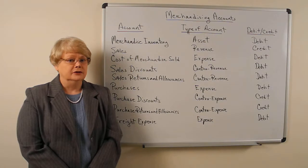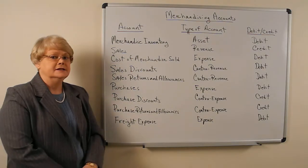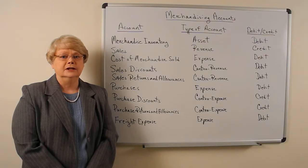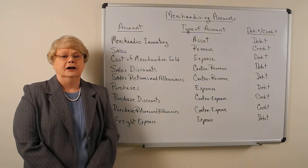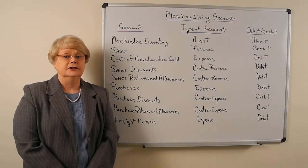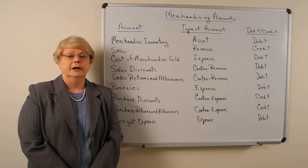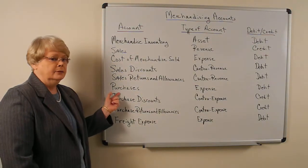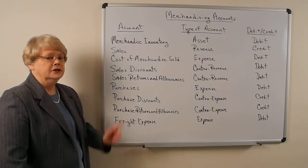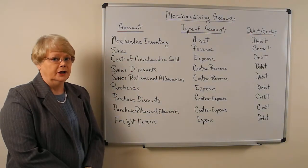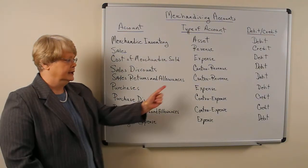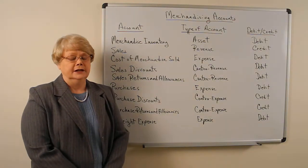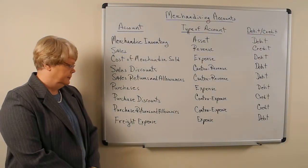That brings us to the next account, which is purchases. Since we are not keeping a cost of merchandise sold account and we're not changing the inventory account when we make purchases, the amounts will go into a purchases account, which is only used for a periodic system. It is an expense account with a normal debit balance and is increased with a debit.